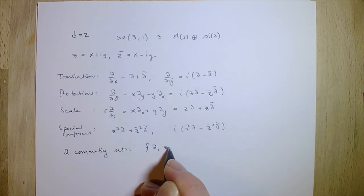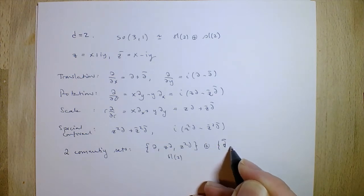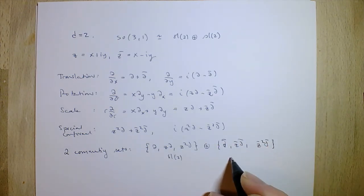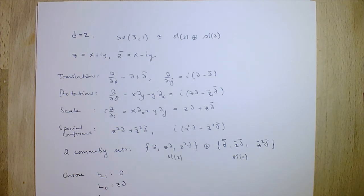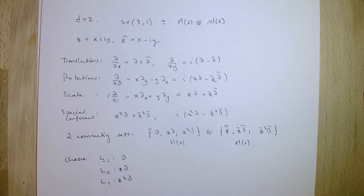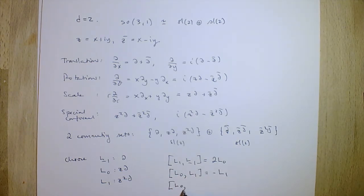We choose names: L_{-1} corresponds to the translation operator d, L_0 to the scale operator, and L_1 to the special conformal operator. These have commutation relations: [L_1, L_{-1}] = 2L_0, [L_0, L_1] = -L_1, and [L_0, L_{-1}] = +L_{-1}.